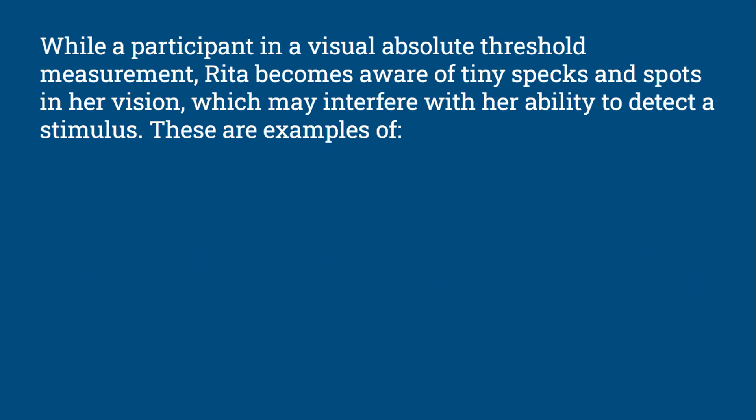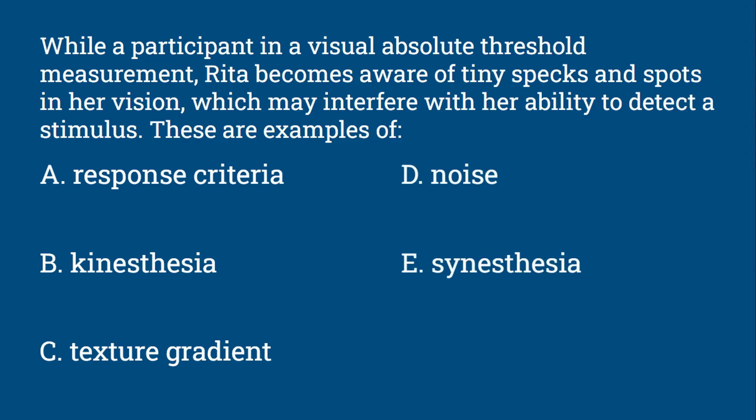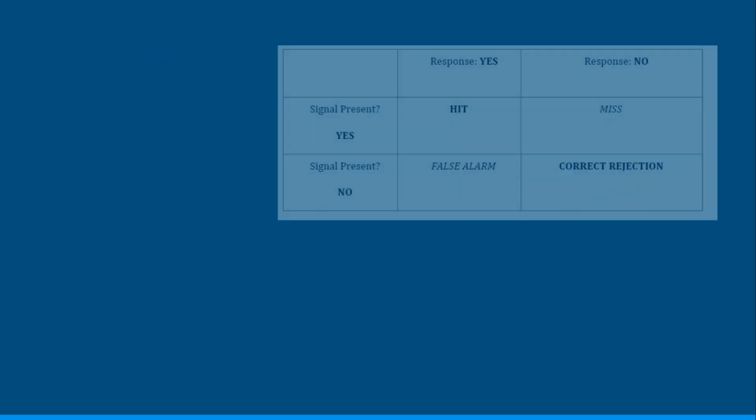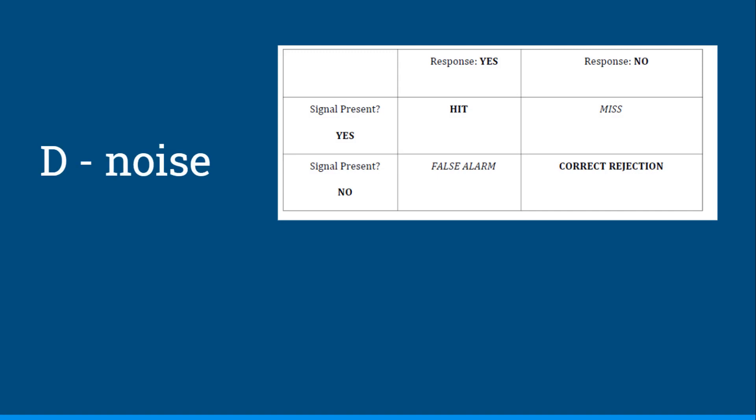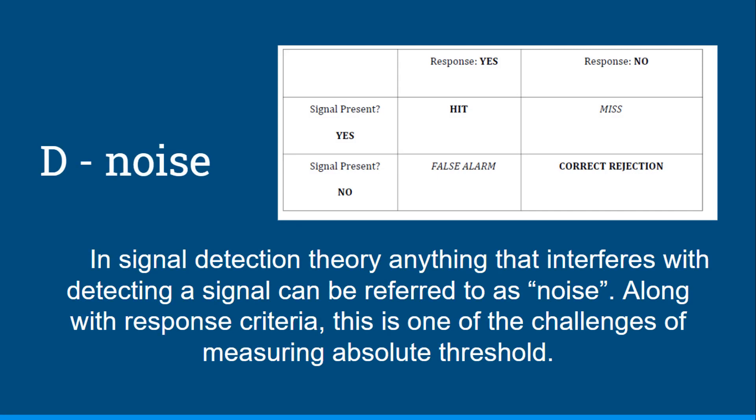While a participant in a visual absolute threshold measurement, Rita becomes aware of tiny specks and spots in her vision which may interfere with her ability to detect a stimulus. These are examples of response criteria, kinesthesia, texture gradient, noise, or synesthesia. These would be examples of D, noise. In signal detection theory, anything that interferes with detecting a signal can be referred to as noise. Along with response criteria, this is one of the challenges of trying to measure absolute threshold.